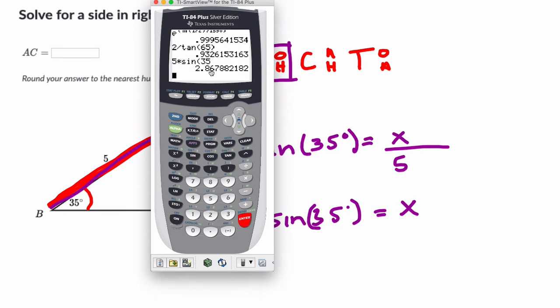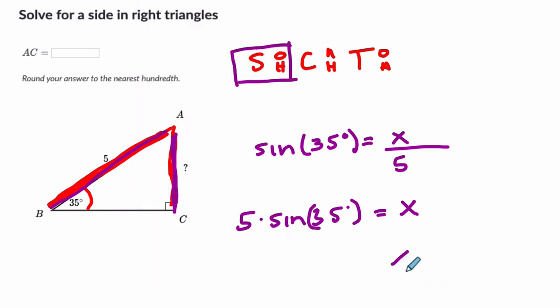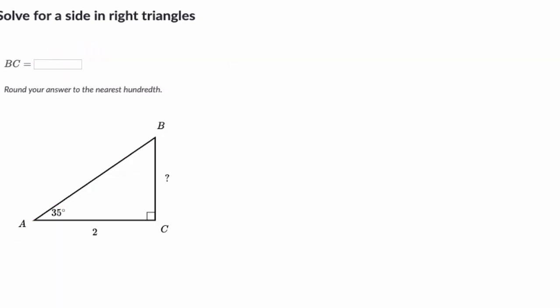And I get 2.86 to the nearest hundredth is 2.87. So X is 2.87. And then if I look at this, that seems reasonable. This is 2.87. That seems reasonable if this is 5 right here. So that is the correct answer. Let's go to the next one.